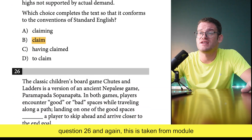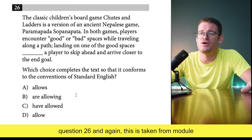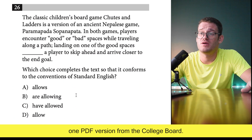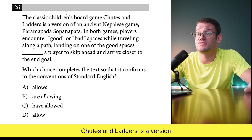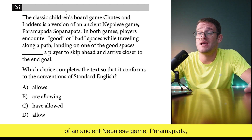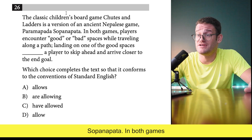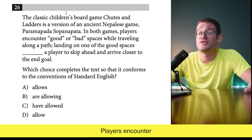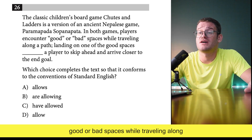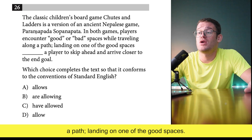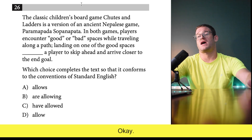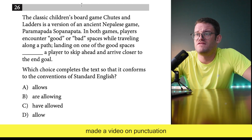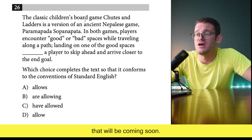Looking at question 26, again from module one of the test one PDF. The classic children's board game Chutes and Ladders is a version of an ancient Nepalese game, Paramapada Sopanapada. In both games players encounter good or bad spaces while traveling along a path. Landing on one of the good spaces blanks a player to skip ahead and arrive closer to the end goal.